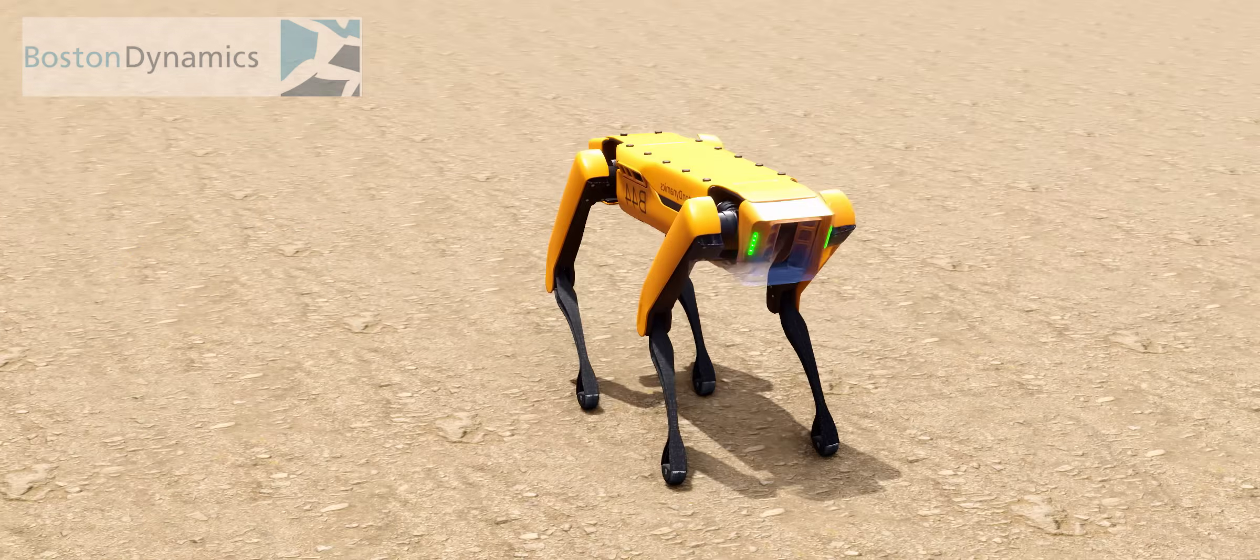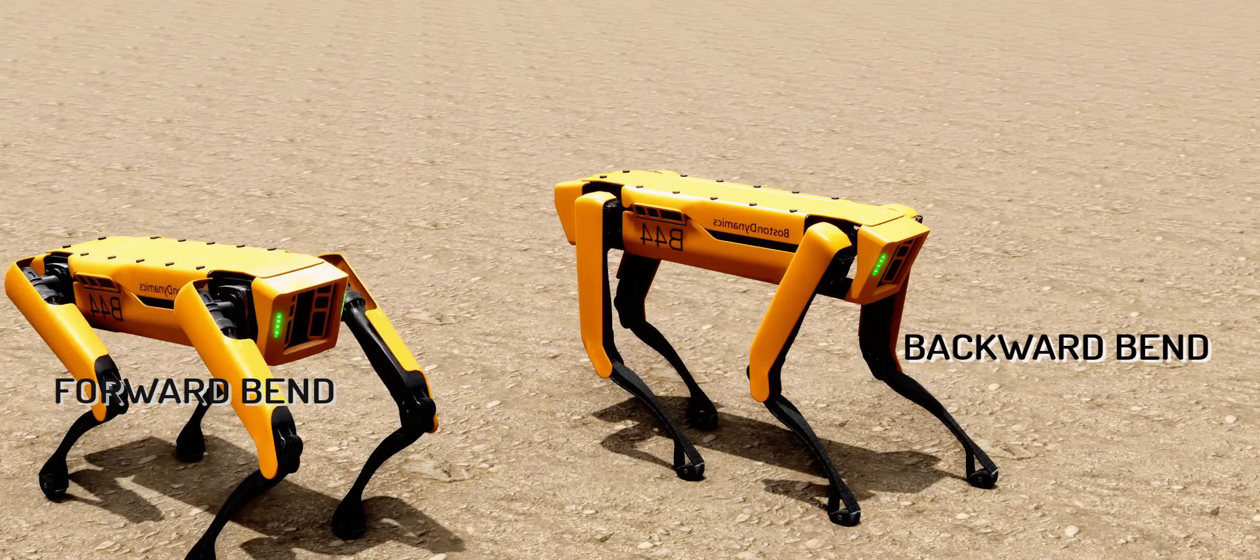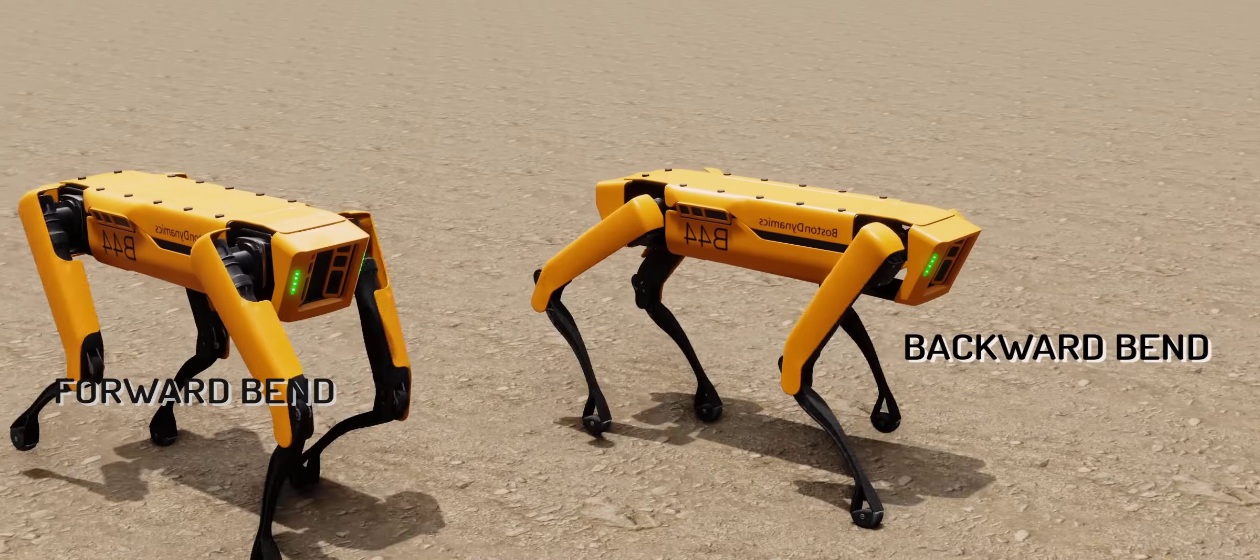The angle of the Spot Robot leg is quite interesting. It's a backward bend design. Now there's one more robot to compete with the original Spot Robot.